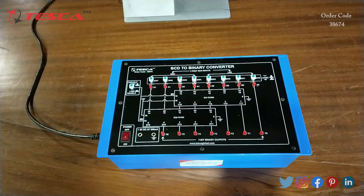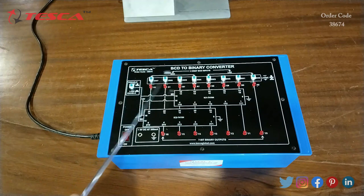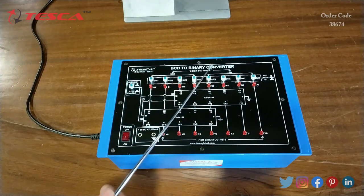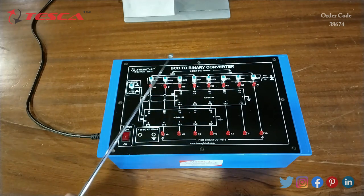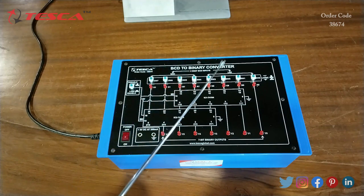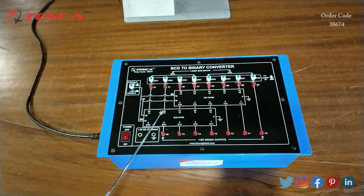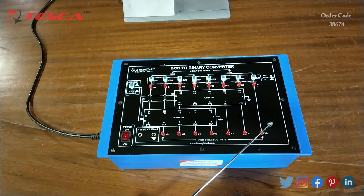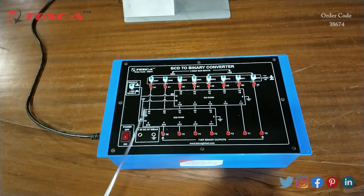This is the BCD to binary converter kit. These are the BCD inputs: we have A0 B0 C0 D0 as LSD inputs and A1 B1 C1 D1 as MSD inputs. This is the first IC 74184 and this is the second IC 74184, and these are the output LEDs.